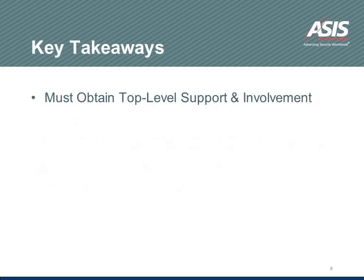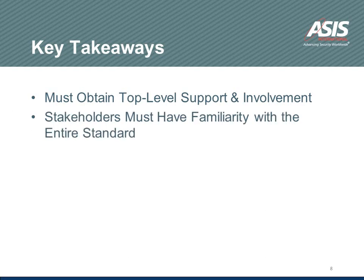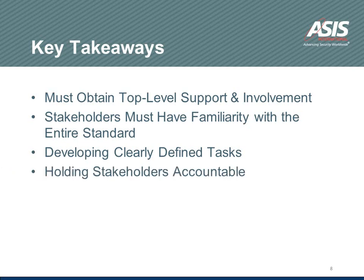Some key takeaways: obtaining top-level management support and involvement. The critical word here is involvement — just having their support really doesn't go a long way. Involvement means having them in the meetings. We had involvement from our CSO and our senior VP of HR. They were there throughout the processes and at each and every meeting. Stakeholders must be familiar with the entire standard — they can't come to meetings unprepared. And we developed clearly defined tasks. What was everyone supposed to do? That was part of the priorities at the beginning and end of each meeting. Holding the stakeholders accountable is key for moving forward.